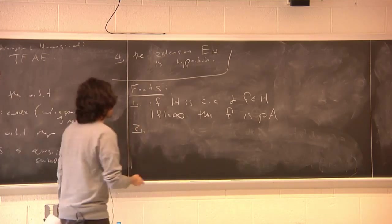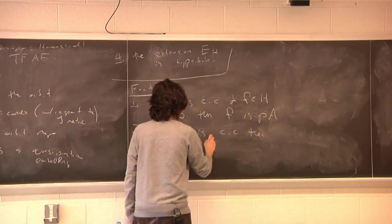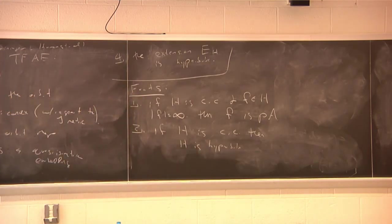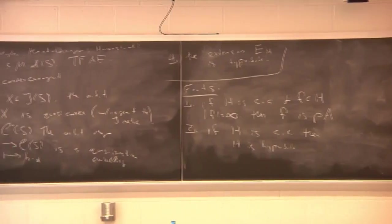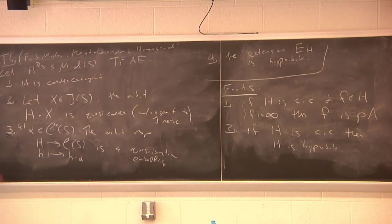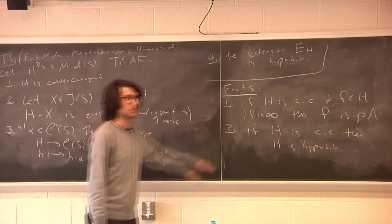Fact two — as was just observed — if H is convex co-compact, then H is hyperbolic. The easiest way to see that is with condition three: the curve complex is a very important object in the study of surface topology, and by the major result of Masur and Minsky, this graph is hyperbolic. Condition three says H quasi-isometrically embeds into a hyperbolic graph, so the group itself is hyperbolic. These are elementary consequences of the assumption of convex co-compactness.